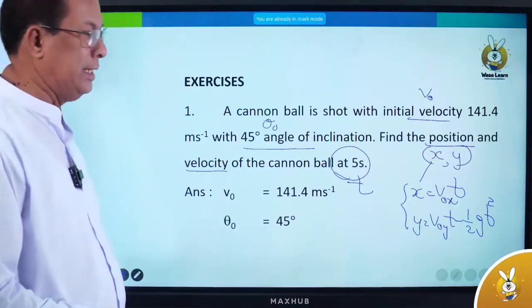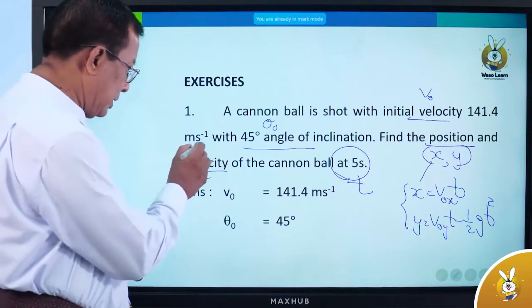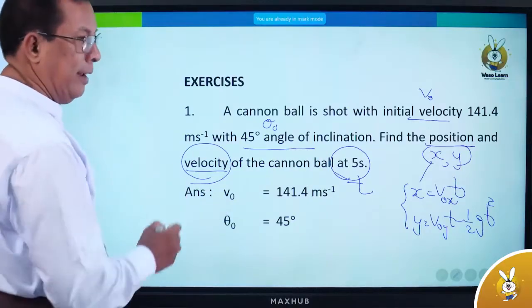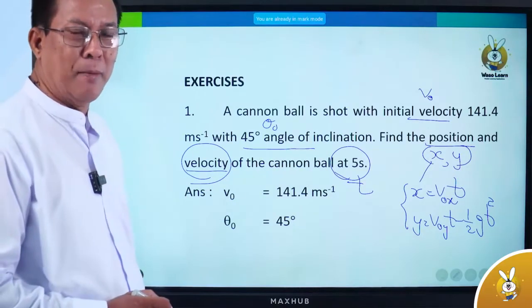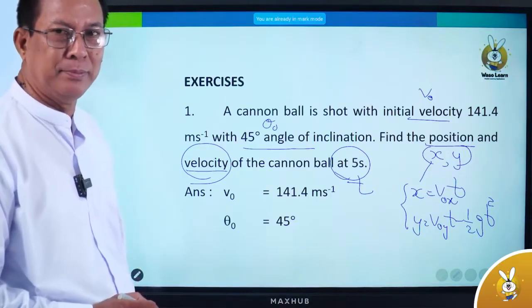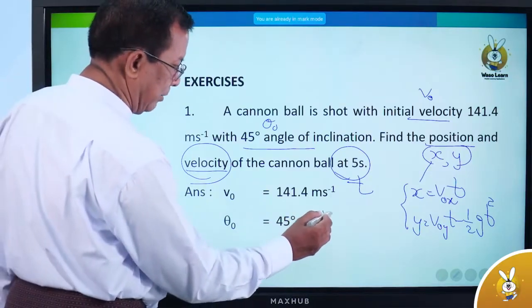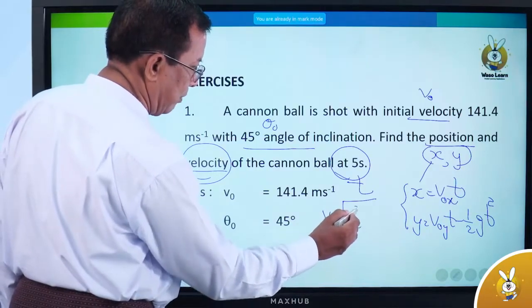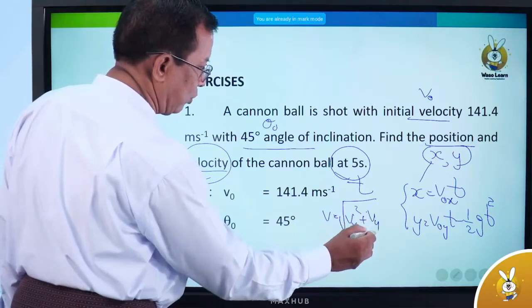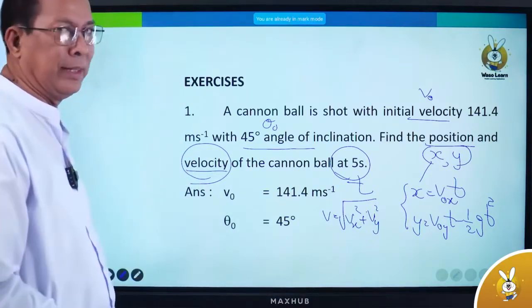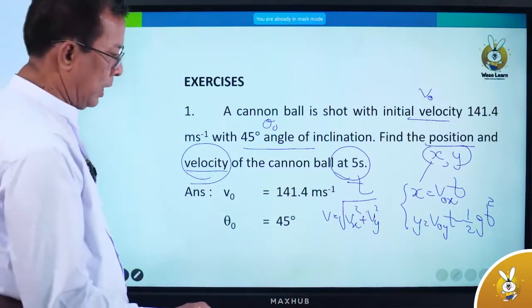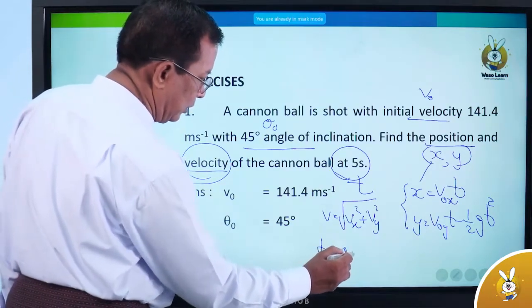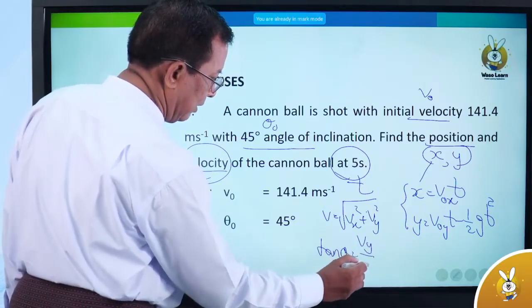The velocity — the velocity is the magnitude and direction. The velocity magnitude is equal to the square root of Vx² plus Vy².